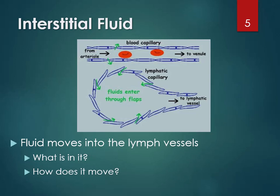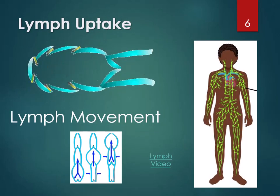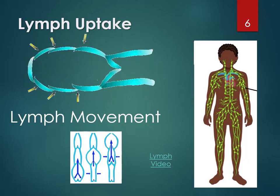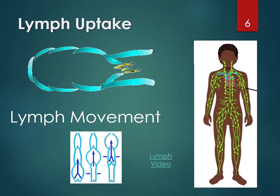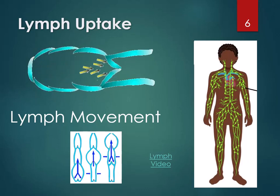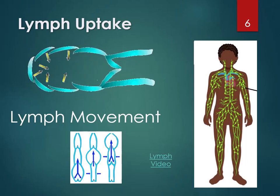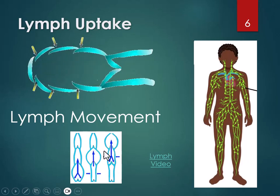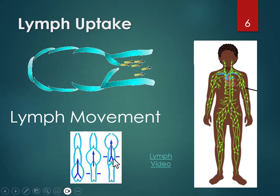There are a couple of things you can do to make lymph move a little better, and one of them is to move yourself. Walking, taking deep breaths, just moving around helps move the lymph. So when you feel like you're going to get sick and you want those white blood cells in your lymph system to catch all the bad bugs, you should take a walk — not hard exercise, but moving around helps. There are also backflow valves in lymph vessels to prevent fluid from going back due to gravity, but really, moving around is the best way to move lymph.